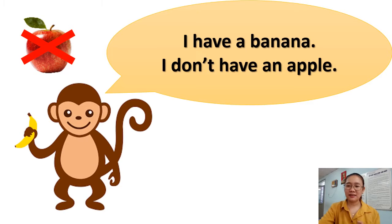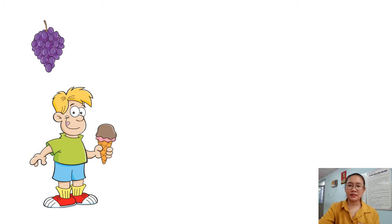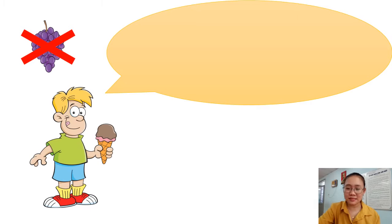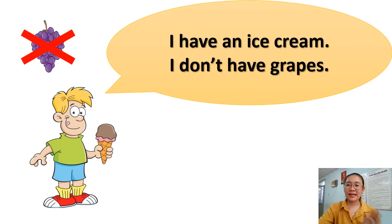Picture two: look at the boy. In his hand is an ice cream, and no grapes. So the sentence is — can you tell me? I have an ice cream. I don't have grapes. Good job!